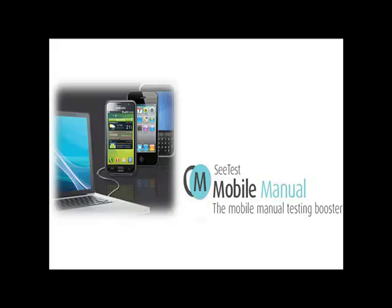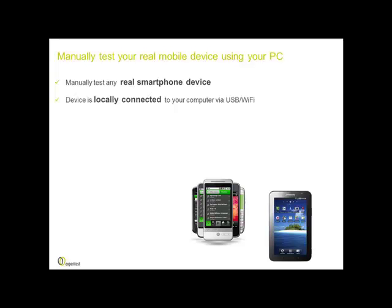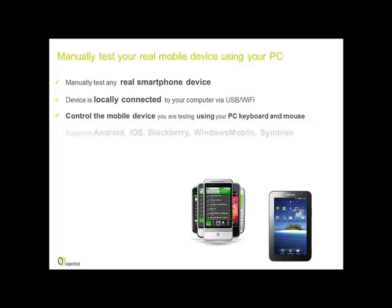In this 3-minute video, we'll present CTest Manual for manual testing of mobile devices. With CTest Manual, you can test real mobile devices connected to your PC. You can test any smartphone device. The device is locally connected via standard USB cable or Wi-Fi to your PC, and you can control the mobile device using your PC keyboard and mouse. All mobile operating systems are supported, as well as all software versions and hardware devices.